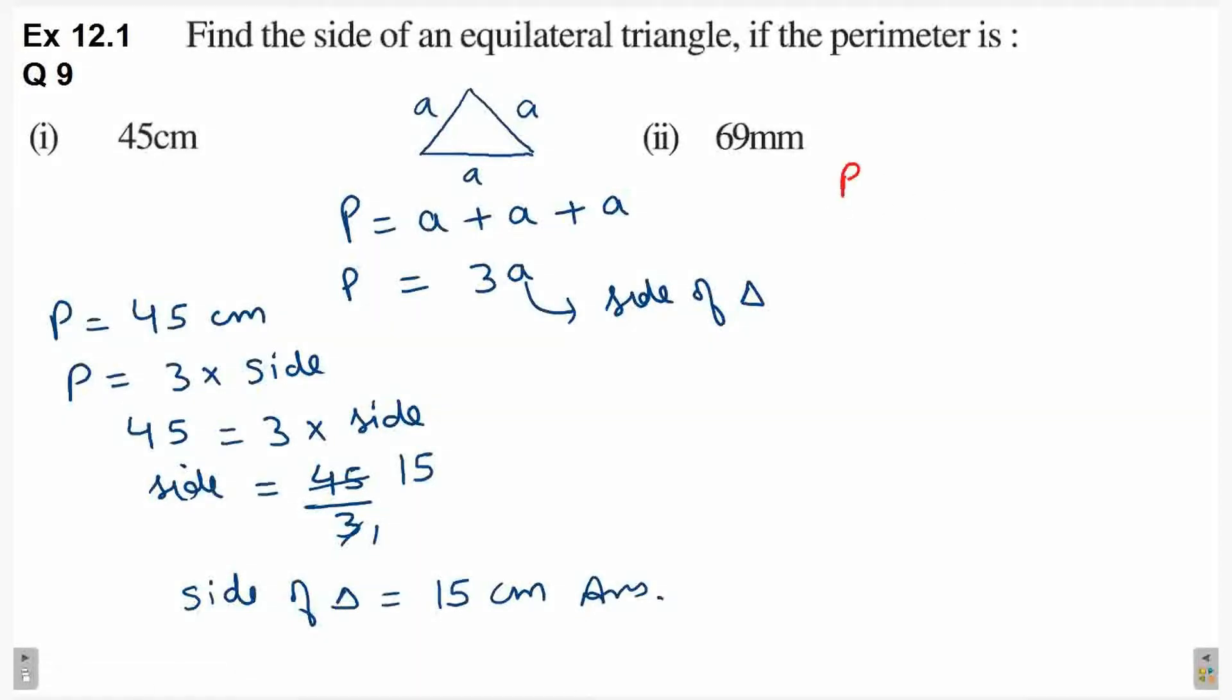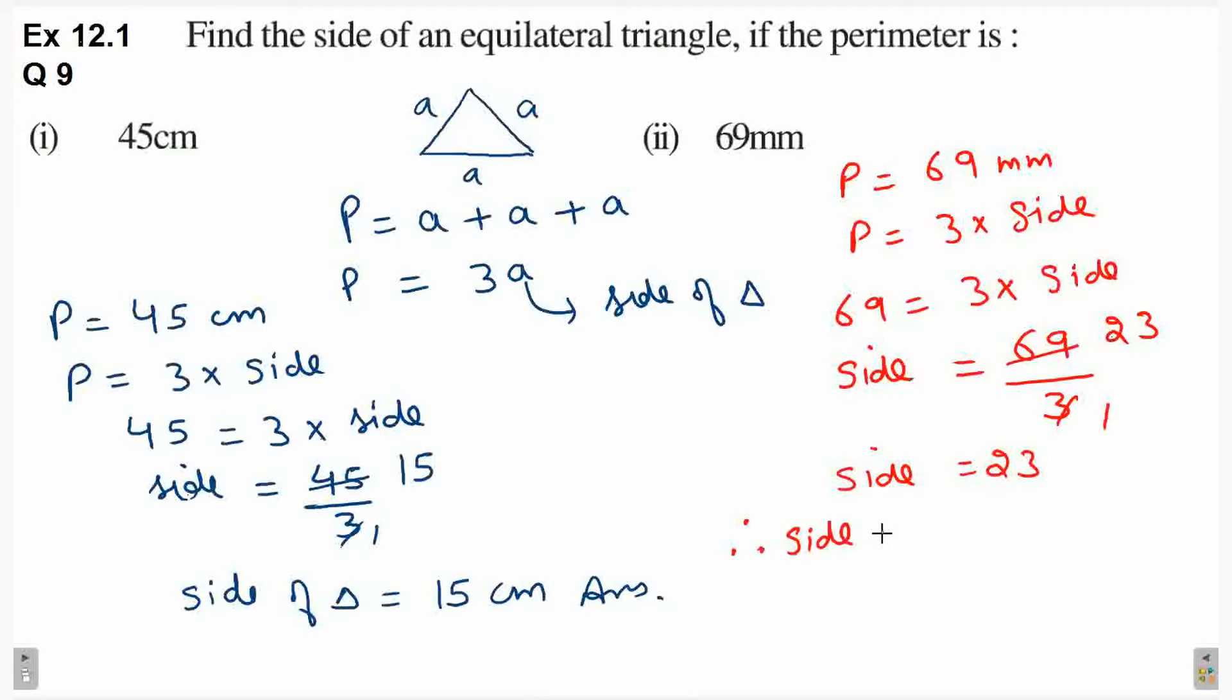Next case mein kaisa, perimeter is equal to 69 mm. Next case mein kaisa lix sakte hai. Here haan per bhi same formula laghega. P is equal to 3 multiply by side. 69 is equal to 3 multiply by side. Side is equal to 69 divided by 3. 3 2's are 6, 3 3's are 9. Side is equal to 23. Therefore, side of triangle is equal to 23 mm. This is your answer.